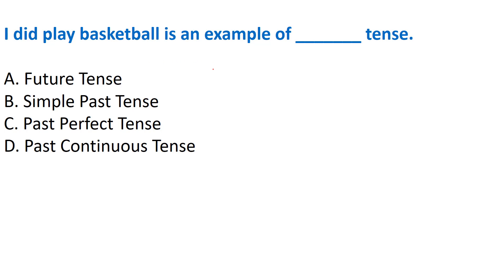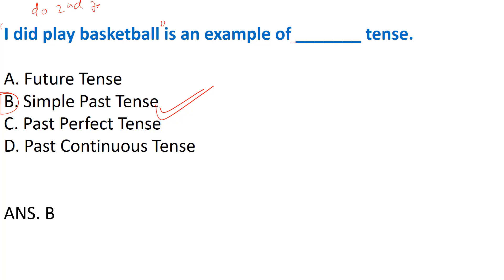Next grammar question: 'I did play basketball' is an example of which tense? Options: A) Future tense, B) Simple past tense, C) Past perfect tense, D) Past continuous tense. Option B is the correct answer - Simple past tense. Here 'did' is the second form of 'do' and is not a helping verb, making this a simple past tense sentence.